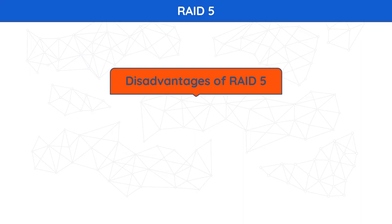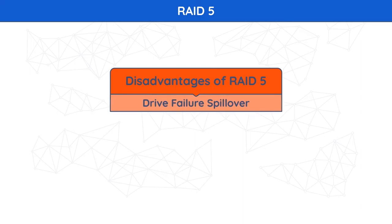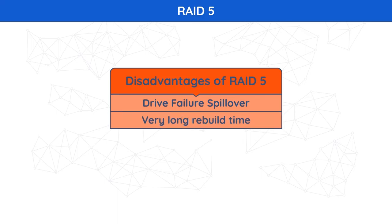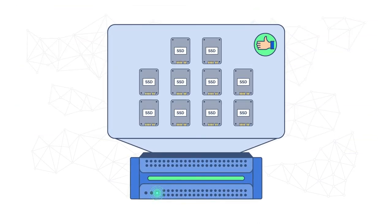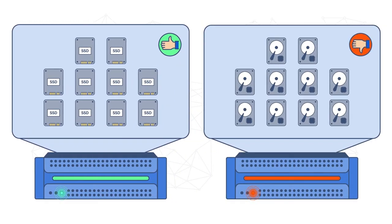Disadvantages of RAID 5: when a drive fails, the rebuild process affects all drives in the parity array, which might cause a second drive failure due to additional workload. This is complex technology. If one of the disks in an array using 4TB disks fails and is replaced, the rebuild time may take a day or longer depending on array load and controller speed. If another disk goes bad during that time, data will be lost forever. RAID 5 is a good choice for SSD-based arrays, but should not be used on HDD-based systems as primary storage. Providing minimum redundancy overhead, it is the most popular choice for file servers and backup repositories.